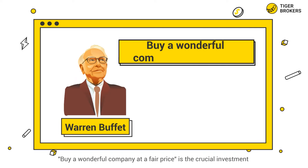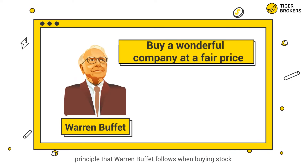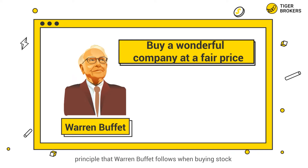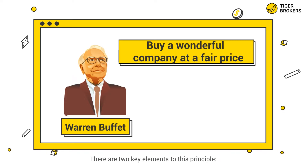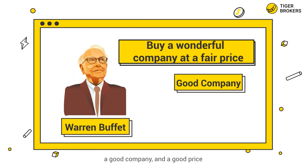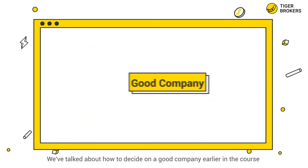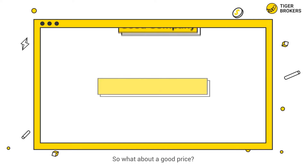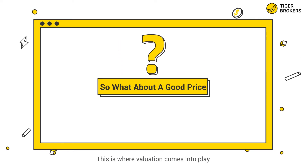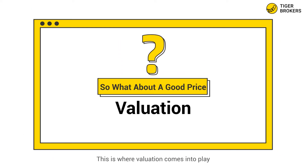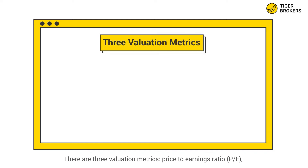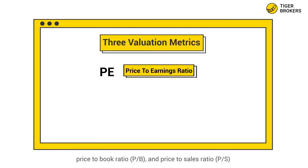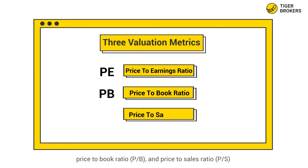"Buy a wonderful company at a fair price" is the crucial investment principle that Warren Buffett follows when buying stock. There are two key elements to this principle: a good company and a good price. We've talked about how to decide on a good company earlier in the course. So, what about a good price? This is where valuation comes into play, using three metrics: price-to-earnings ratio, price-to-book ratio, and price-to-sales ratio.